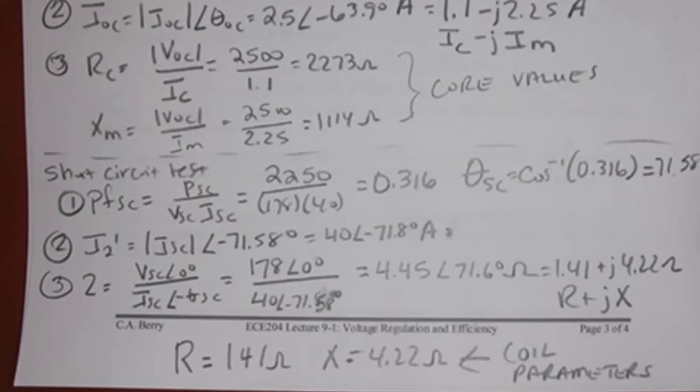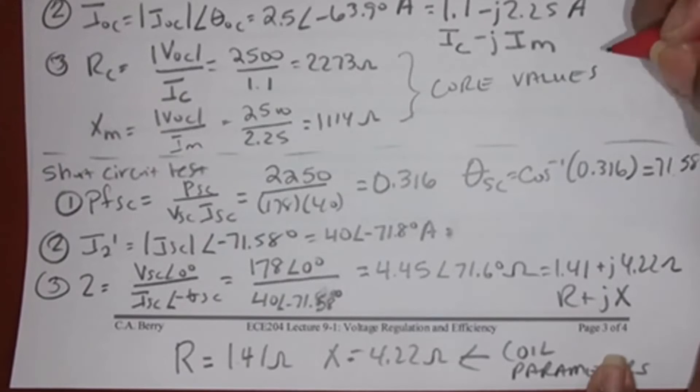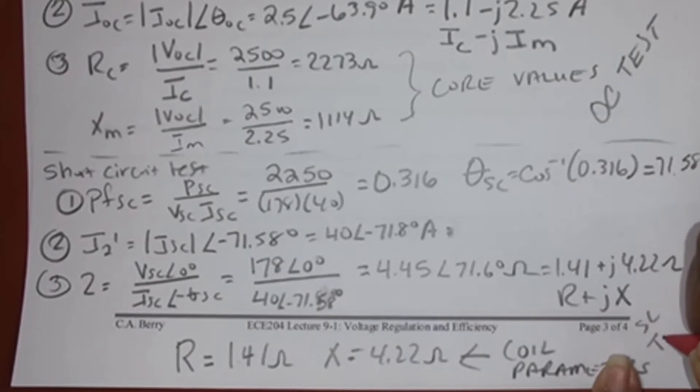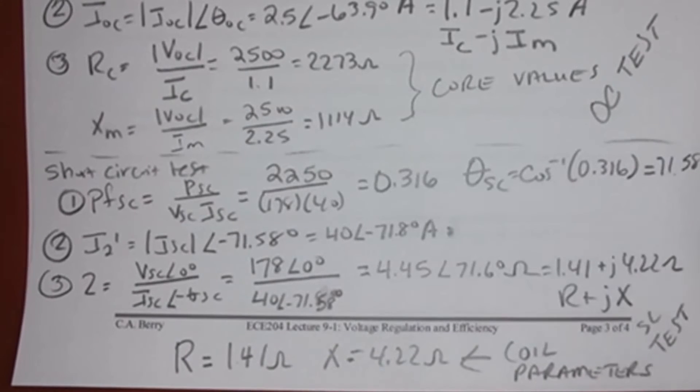And the two of those together are the coil parameters. So use the open circuit test to find the core parameters or values, and then we use the short circuit test to find the coil parameters.